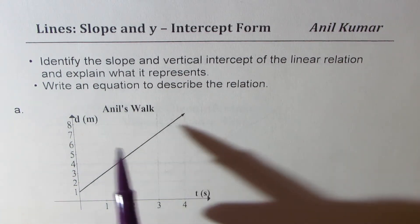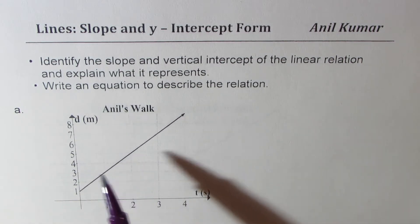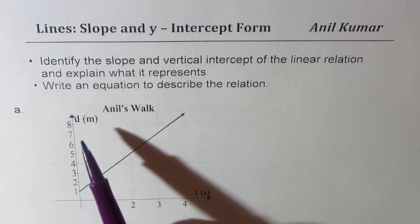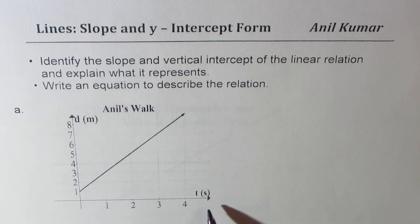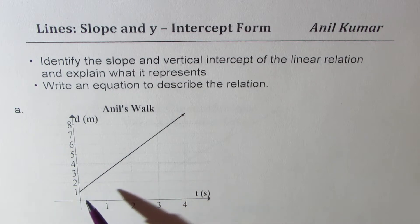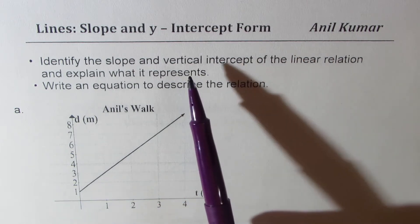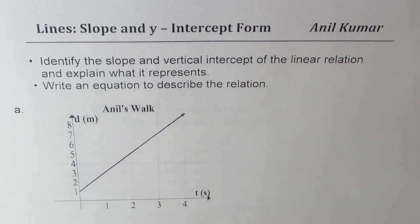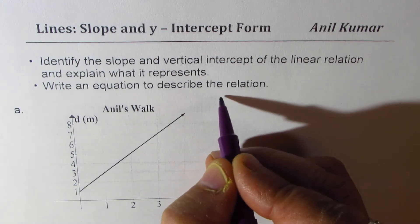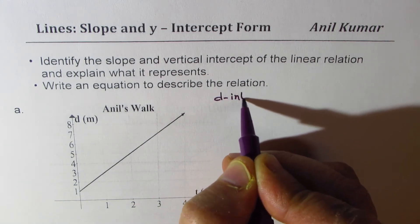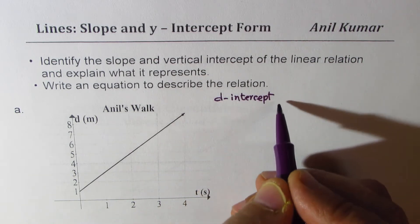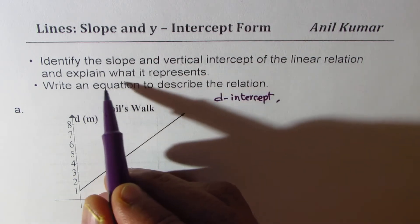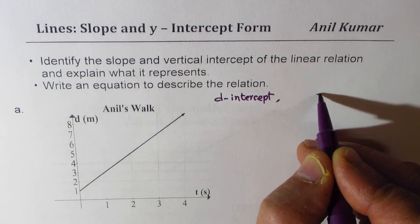Case A is Anil's walk. On the vertical axis we have distance in meters, and on the horizontal x-axis we have time in seconds. Here we need to describe what is the vertical intercept — we'll call it the D intercept — and the slope. So we need to find both the slope and the D intercept.